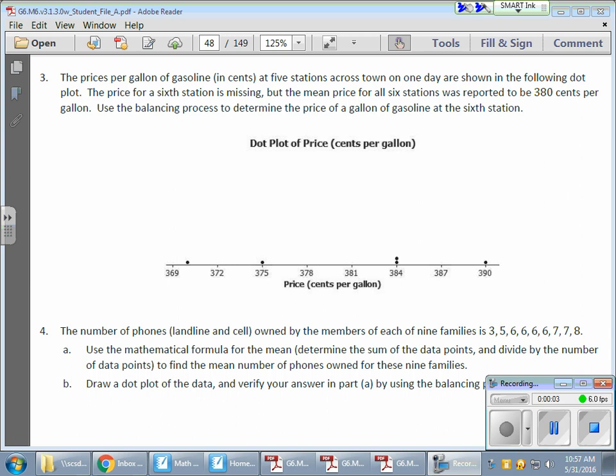OK, so in today's math lesson, we're working on a mean or an average, but we're looking at it in terms of a balancing point, which is kind of neat. It's looking at the center of our distribution, but looking at that center of distribution as a scale or a balance. And in our situation here, we have the prices per gallon of gasoline in cents at five different stations across town.